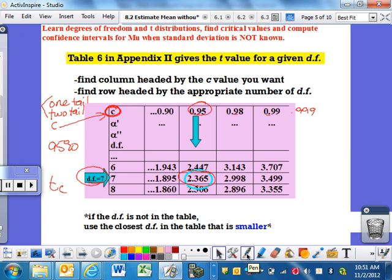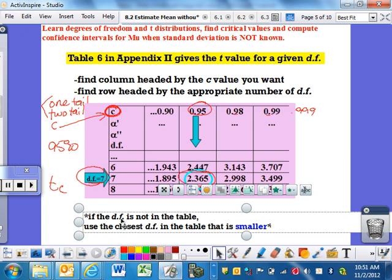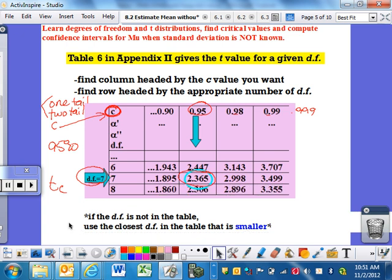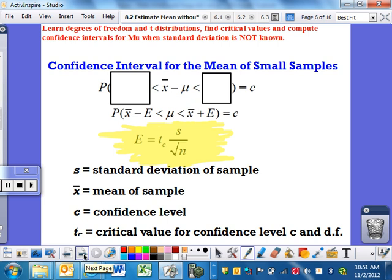If your N, or degrees of freedom, is not on the chart, you must go to the number that is smaller. And I will show you an example of that as well in the second example that we have.